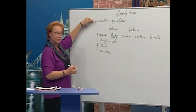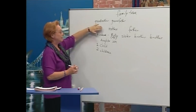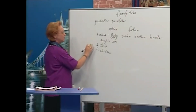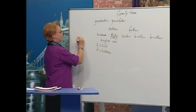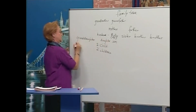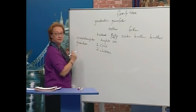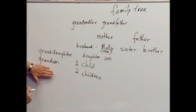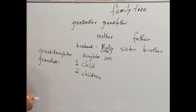Now, my grandmother, my mother, me, my daughter — my daughter is granddaughter and my son is grandson. One, two, three, four levels.